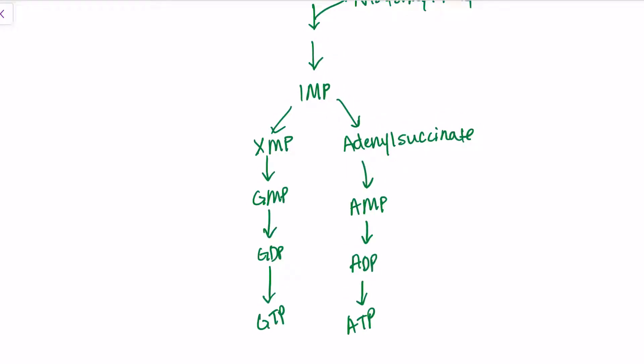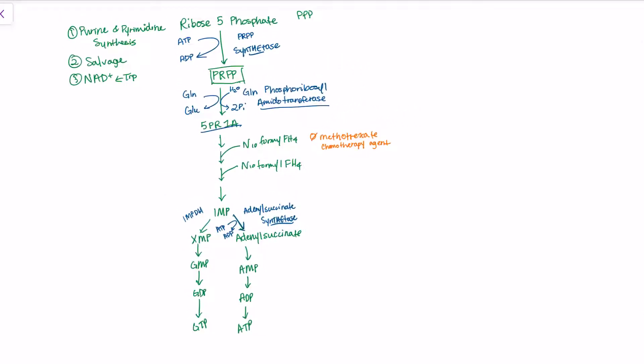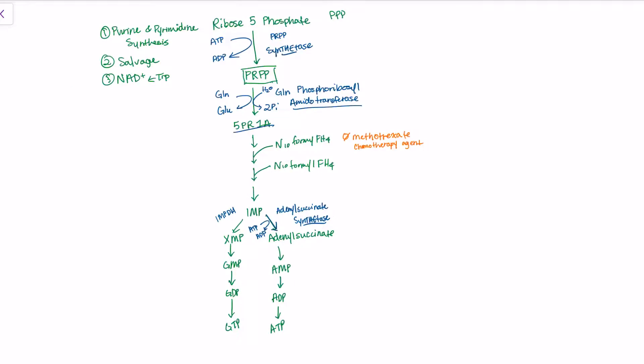Two important enzymes: going from IMP to adenylosuccinate is adenylosuccinate synthetase. As I told you, anytime we have a synthetase, we utilize ATP. Over here is IMP dehydrogenase. Anytime I tell you you need to know an enzyme, it's usually because they're allosterically regulated. We're going to go back through all the enzymes and show how they are allosterically regulated.